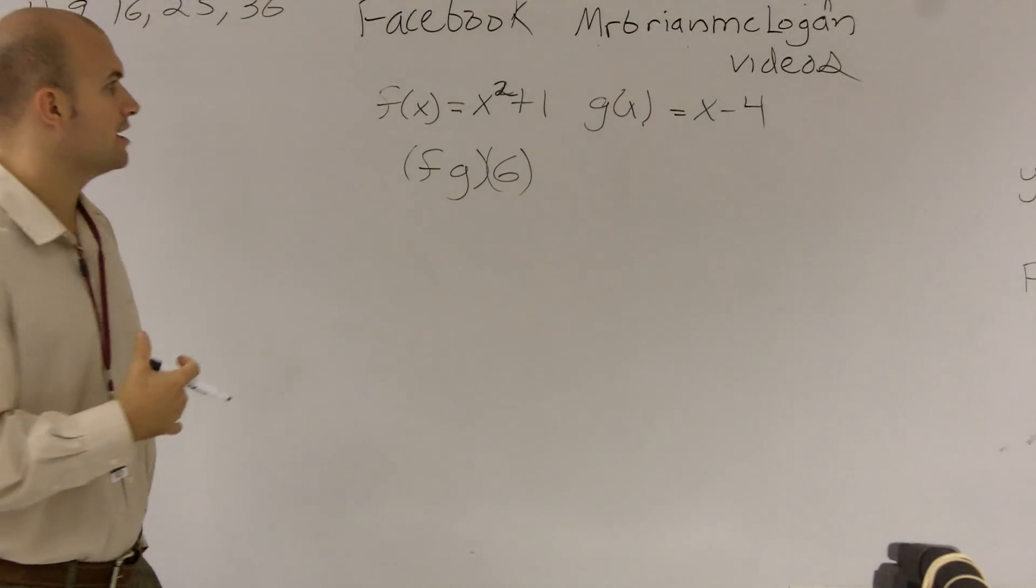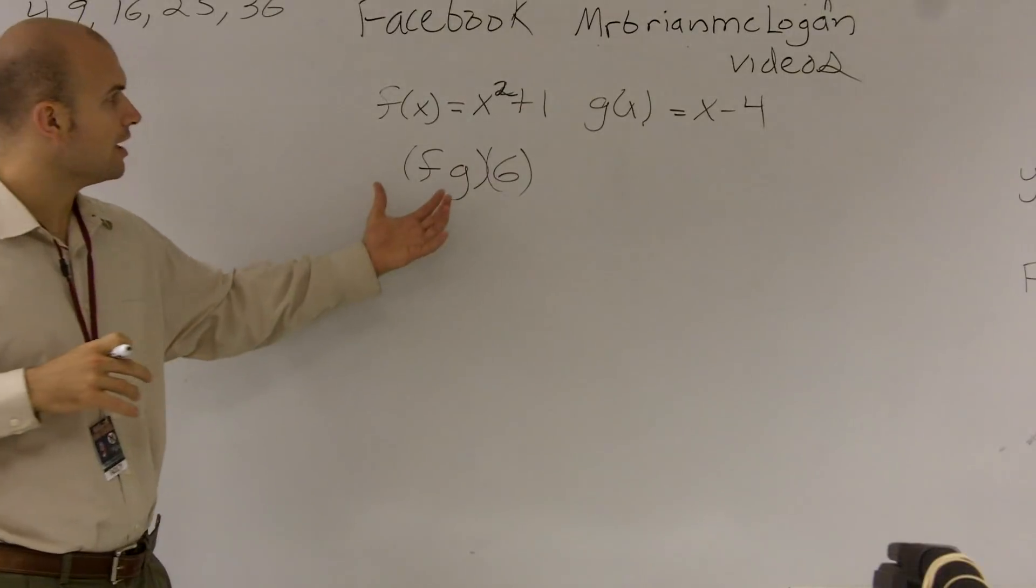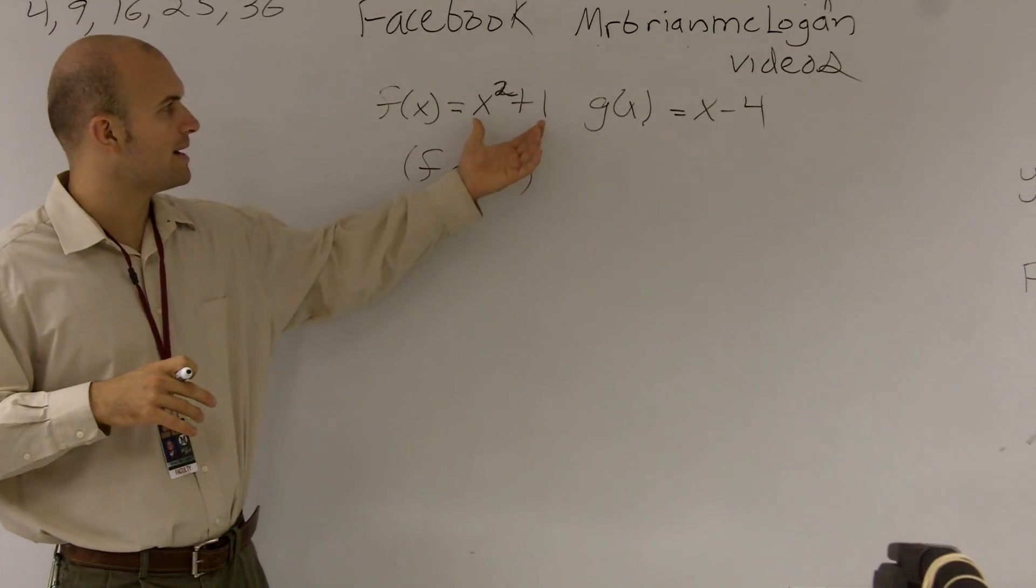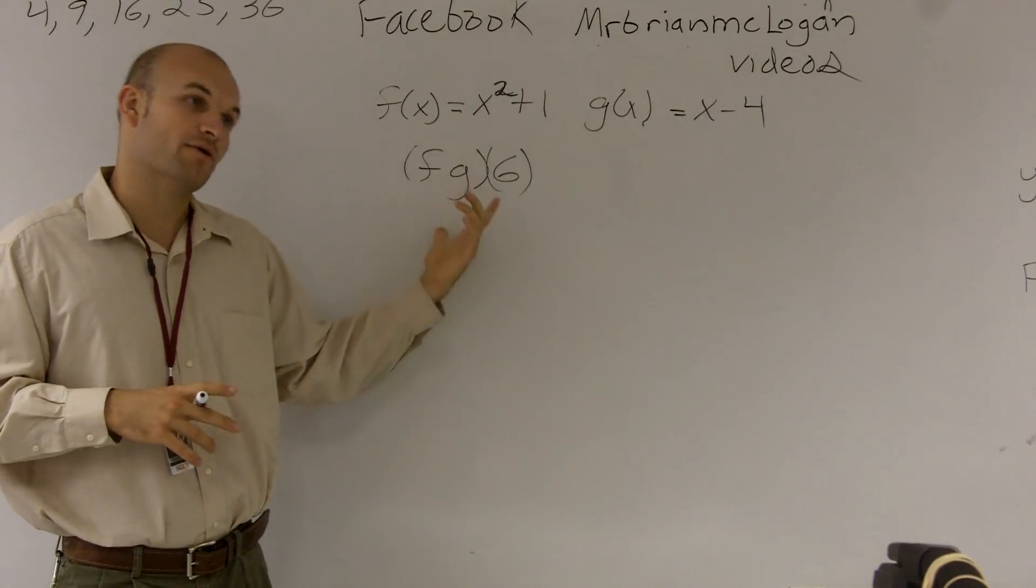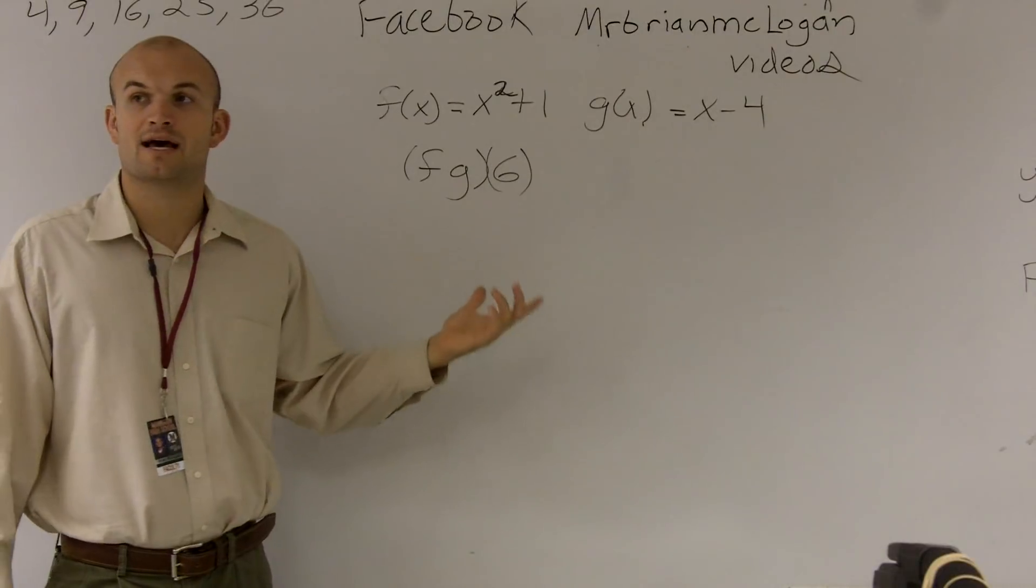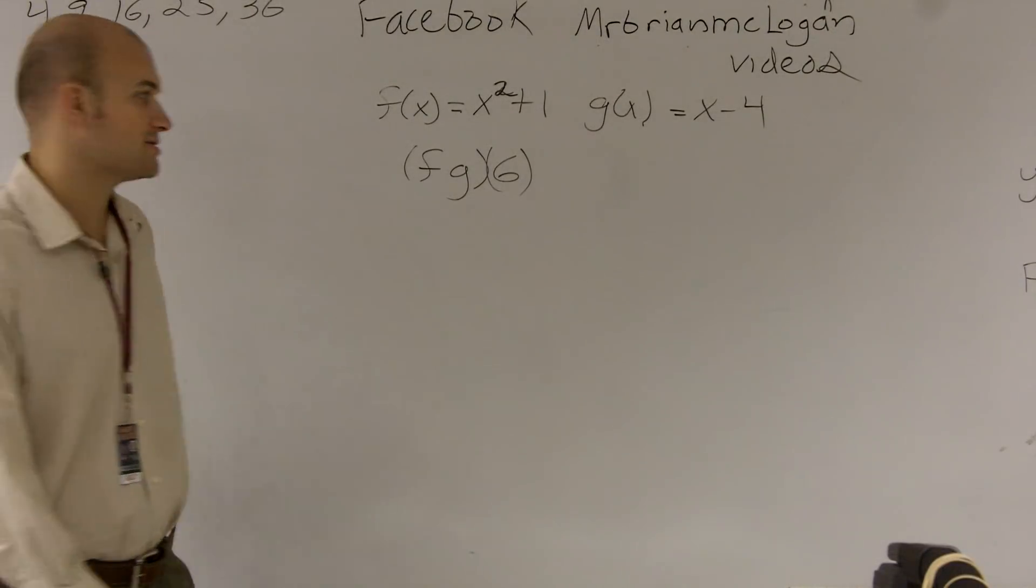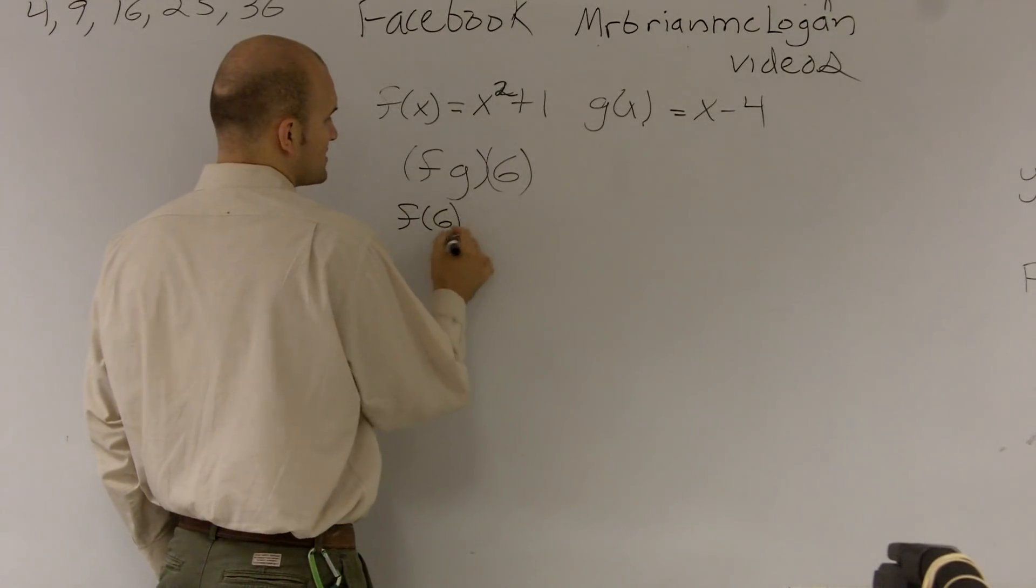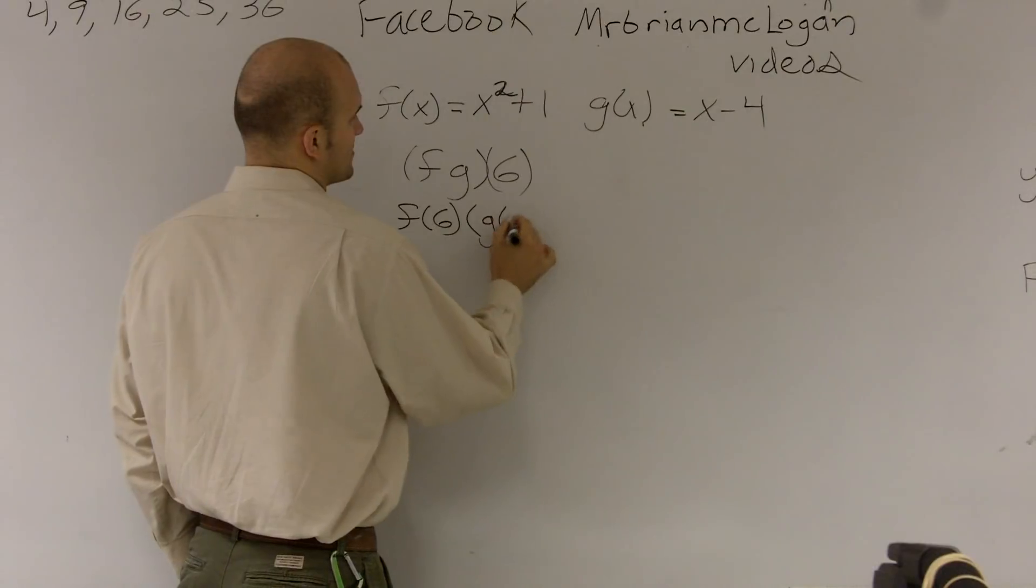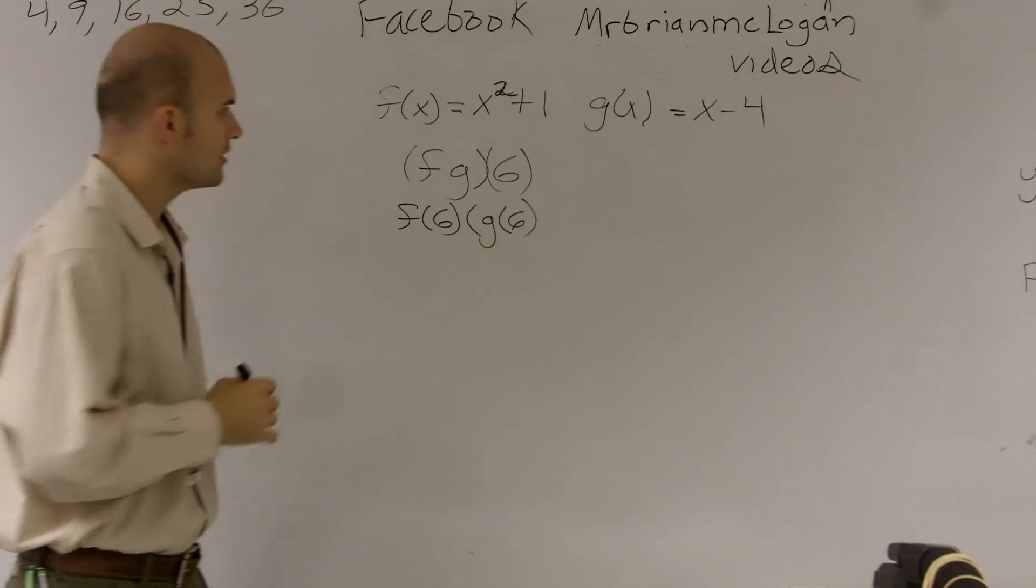We could do it the long way by actually multiplying these two functions and then evaluating them, or we can evaluate them and then multiply and see what we get. So really what this is saying is do f of 6 times g of 6.